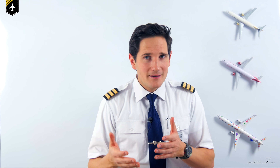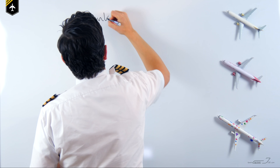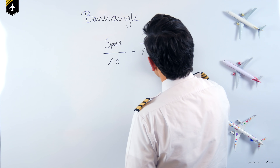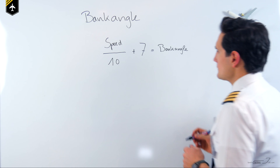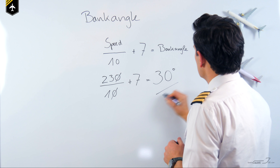Keep in mind the airplane's speed, because the speed determines your bank angle for those 16 seconds. Here's the next rule of thumb: if we are flying at 230 knots, divide the speed by 10 and add 7, and you will get a bank angle of 30 degrees for those 16 seconds. Let's try that out.